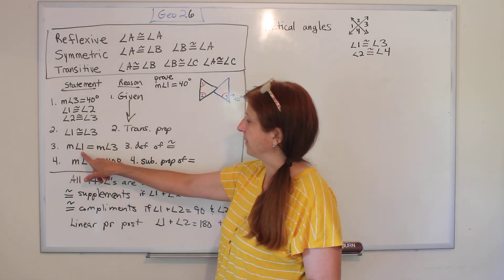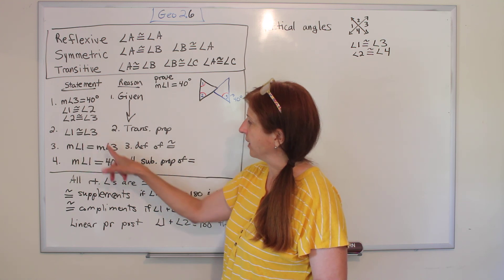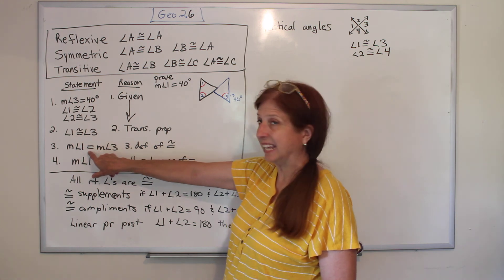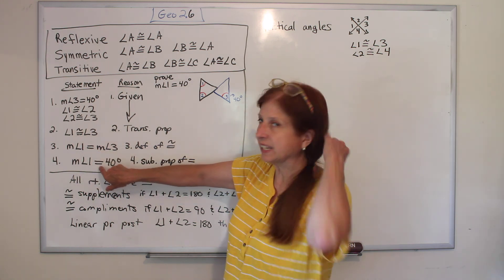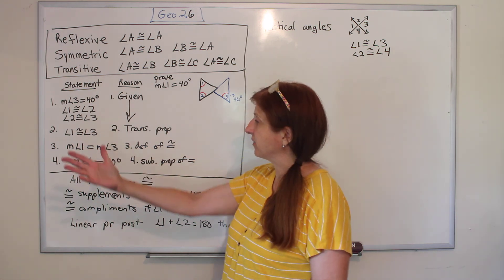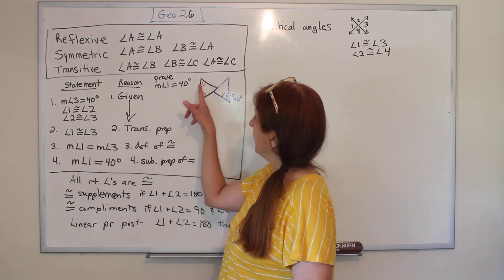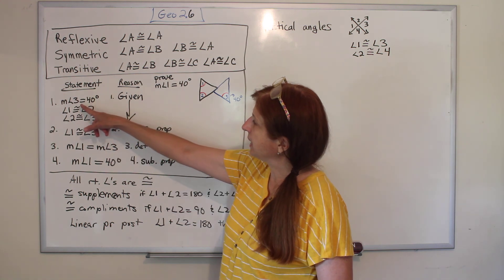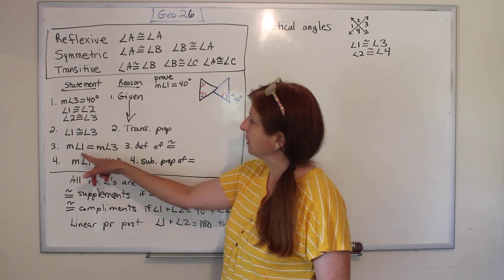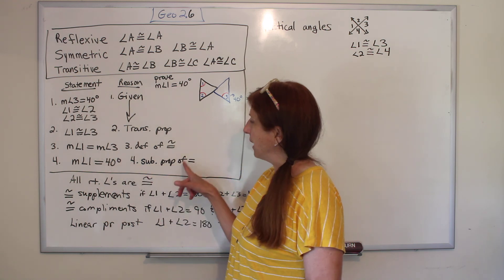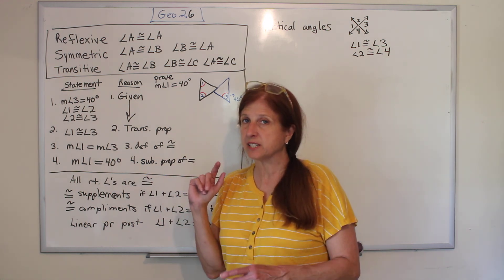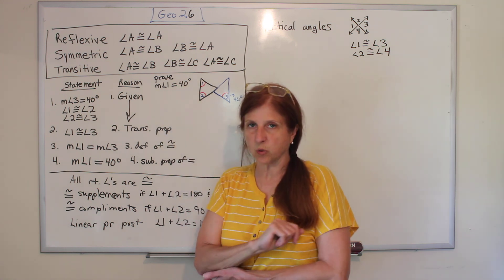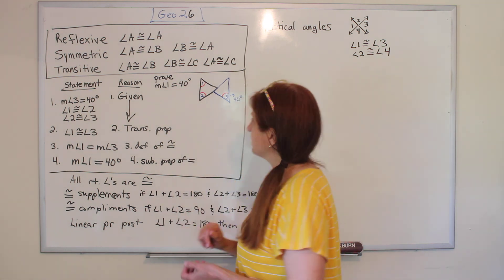Okay, then next we can say that the measure of angle one is equal to the measure of angle three by the definition of congruence, because we wanted to change from congruent to equals, because what we're proving is in equals. Gives us another line. And then we can say that the measure of angle one is equal to 40 degrees. Because we have the measure of angle three is 40 degrees, we have shown these are equal. So by substitution, we have proved that measure of angle one is 40. Alright, so let's look at another one.